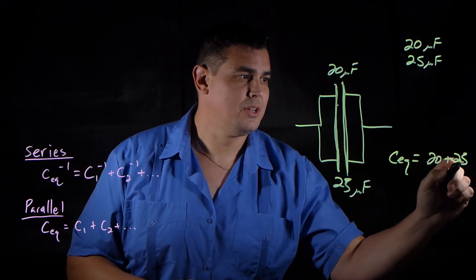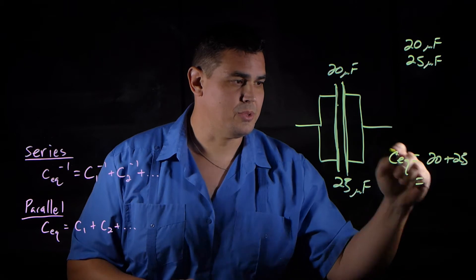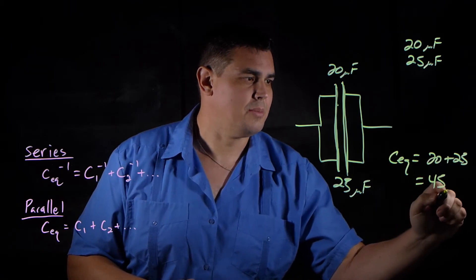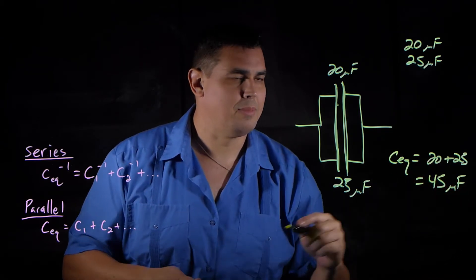And so the equivalent capacitance is just going to be the sum of the two. So it's going to be 20 plus 25. So in this case, with these two, it's going to be 45 microfarads.